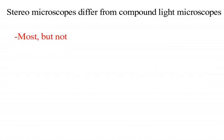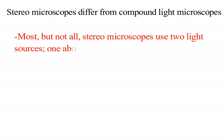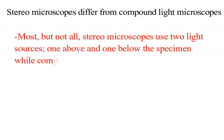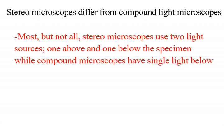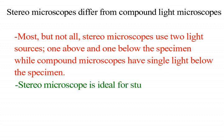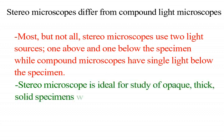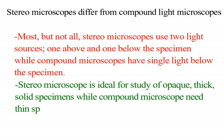Most but not all stereomicroscopes use two light sources, one above and one below the specimen, while compound microscopes have a single light below the specimen. Stereomicroscopes are ideal for study of opaque, thick, solid specimens, while compound microscopes need thin specimens for visualization.